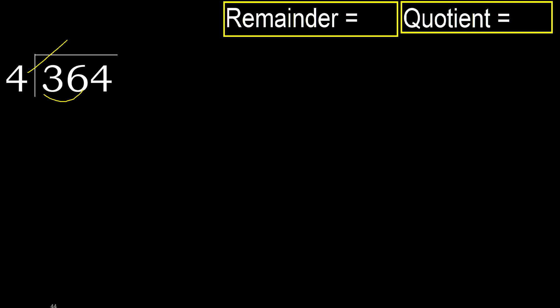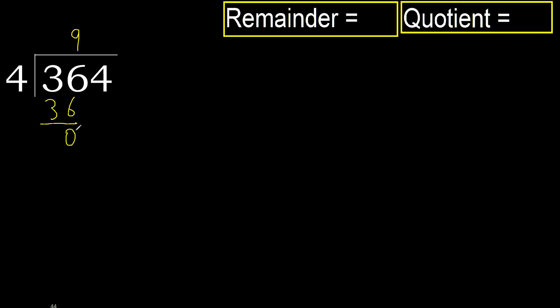4 — multiply by which number is nearest to 36 but not greater. 4 multiplied by 9 is 36, which is not greater. Subtract: 36 minus 36 equals 0.